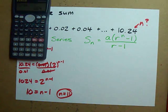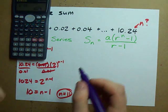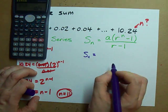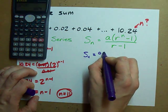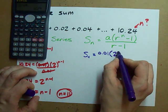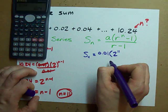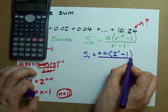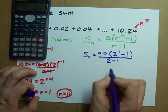Once you do that you can plug into this formula. The sum of the first 11 terms is the first term times the common ratio to the power of N, 11 terms, minus 1, all over the common ratio minus 1.